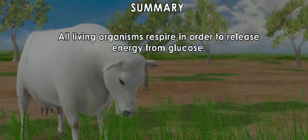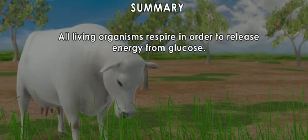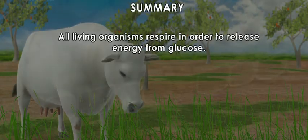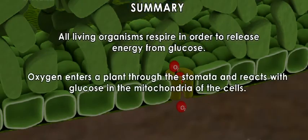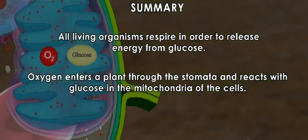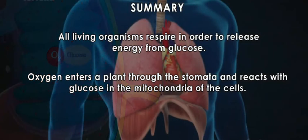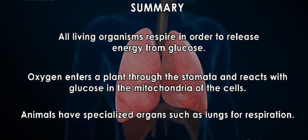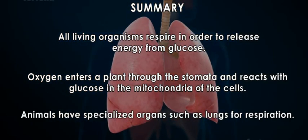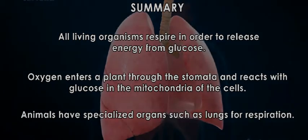Summary: All living organisms respire in order to release energy from glucose. Oxygen enters a plant through the stomata and reacts with glucose in the mitochondria of the cells. Animals have specialized organs such as lungs for respiration.